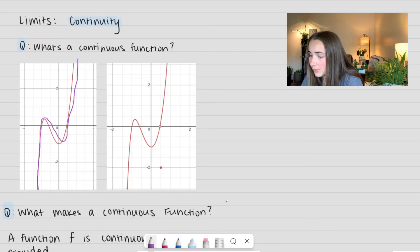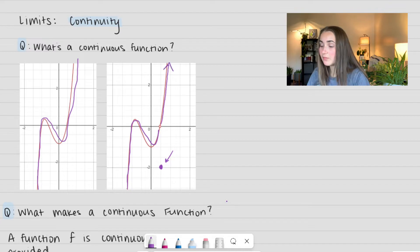My other function right here on the right, as I'm drawing, notice right here, I have to pick up my pen in order to fill in this little dot. And now I pick up my pen to go back up and continue on. This is not a continuous function because I can't draw it smoothly in one stroke.